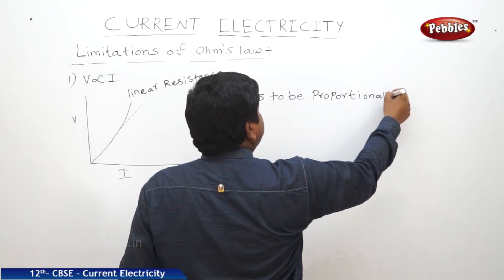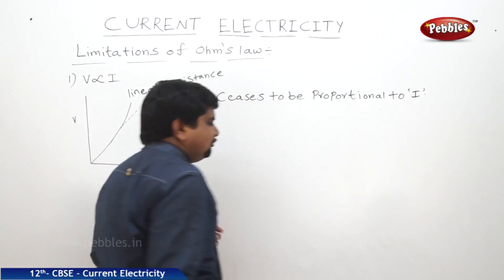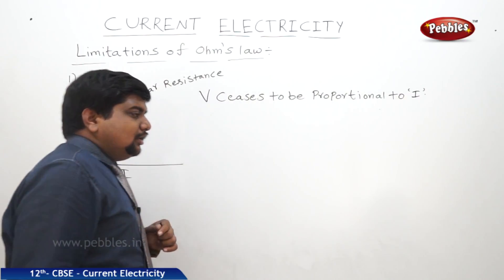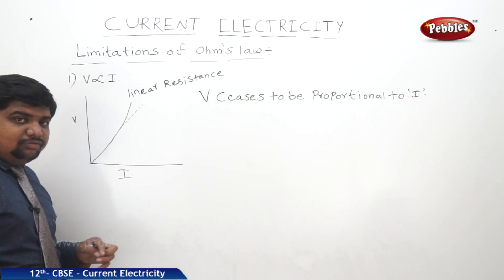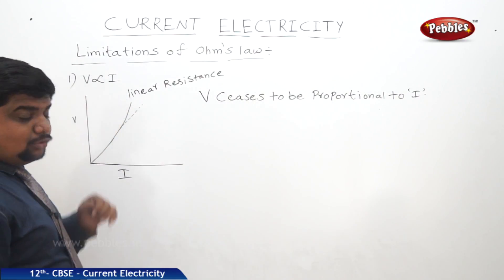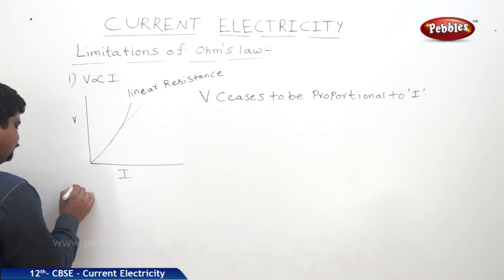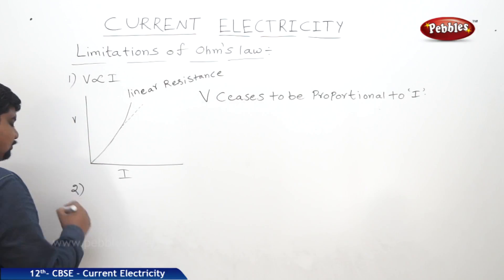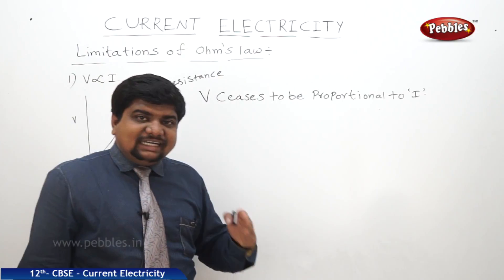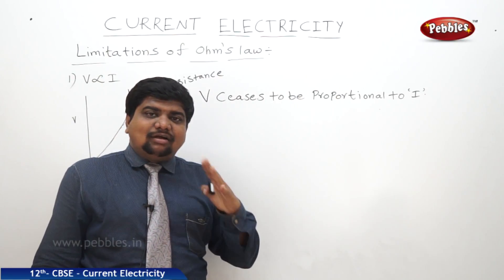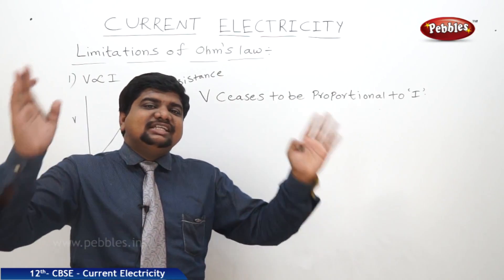This is one reason where non-ohmic conductors play a key role — they do not obey Ohm's law. In some cases, the direction of voltage and current are always opposite to each other.